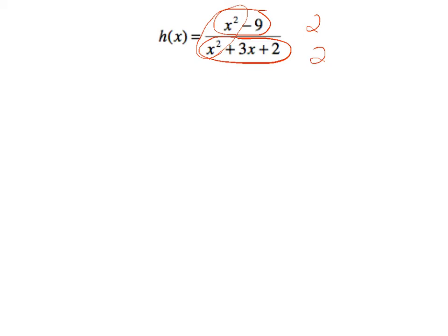So what we're going to do is focus in just on those second degree terms. Because as x gets infinitely large, those lesser terms, those lower degree terms, become less influential, leaving us with simply x squared over x squared.